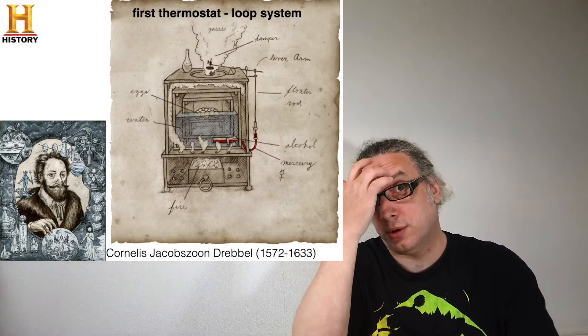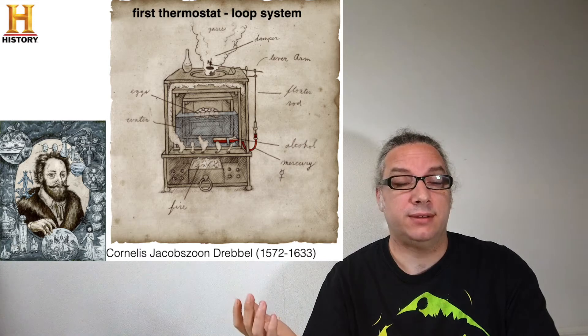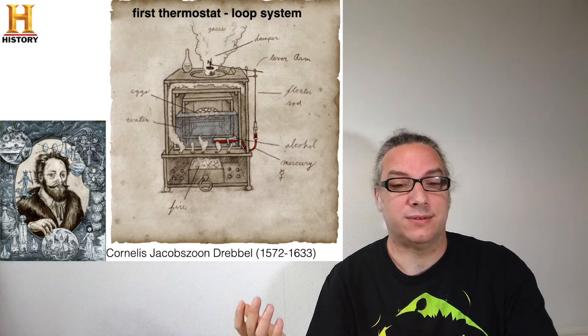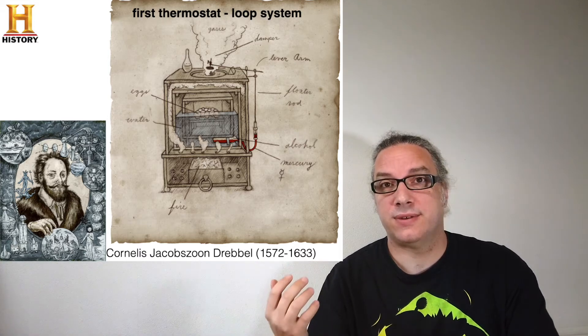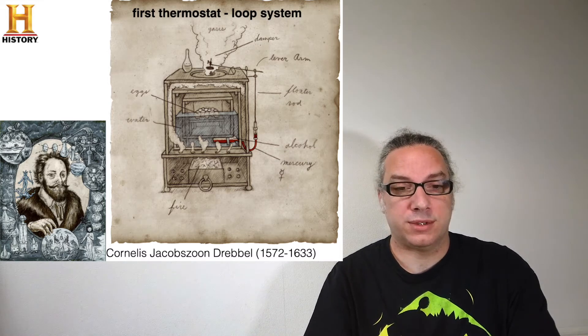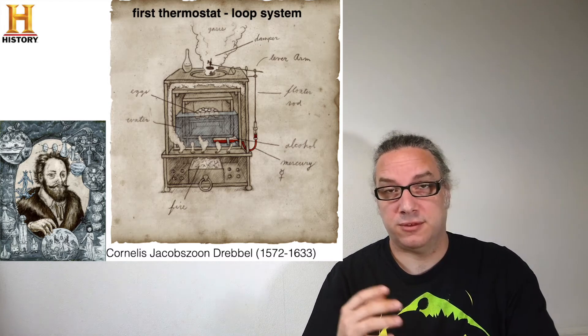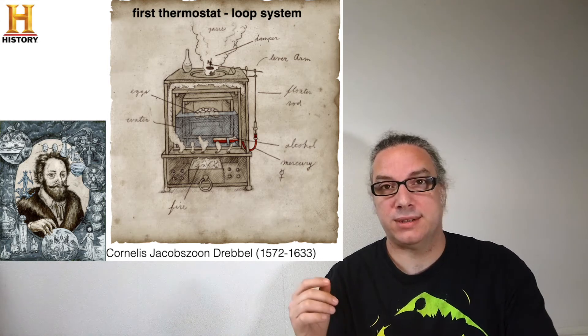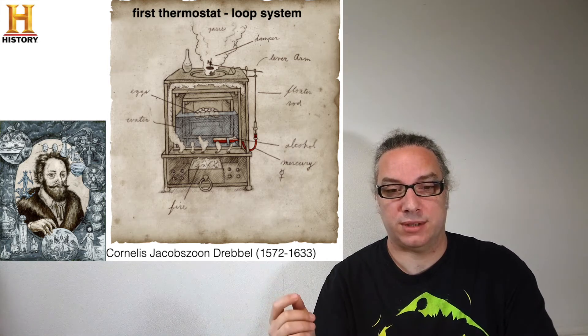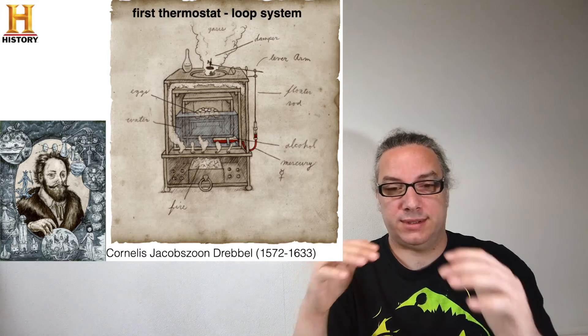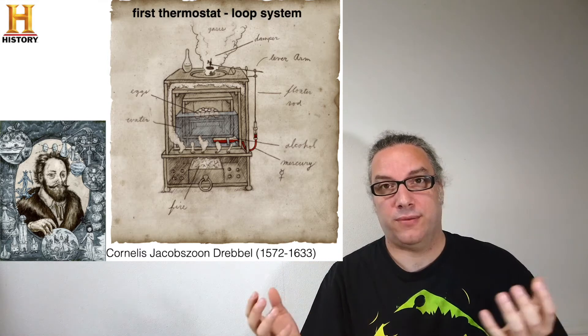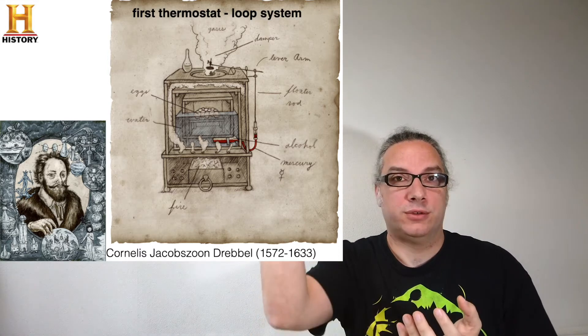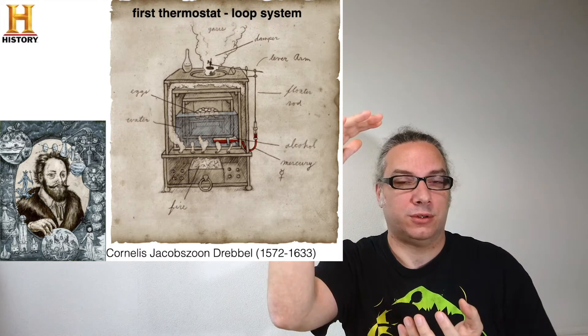I want to show you also the first thermostat, or at least what I think was the first thermostat, and it's the first loop system. This one was invented by Drebbel, let's say, a few years ago, and for me is the first loop system. You have this oven and you have fire from the bottom and you have also something that opens and closes on the top.